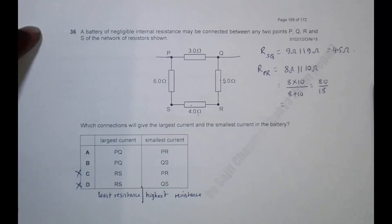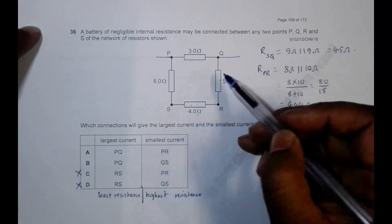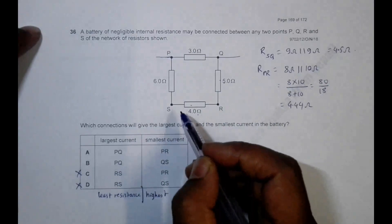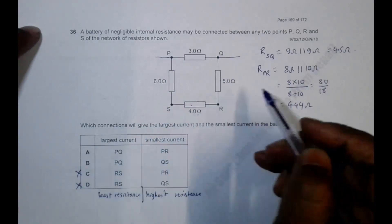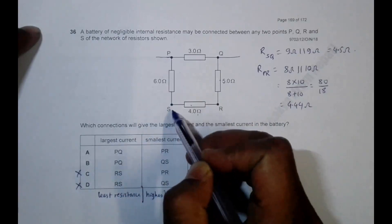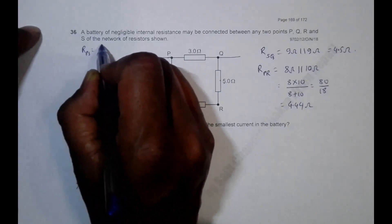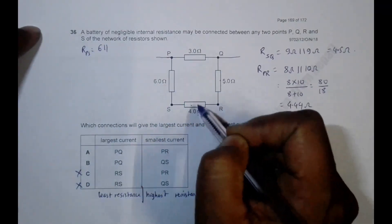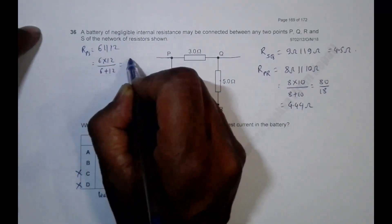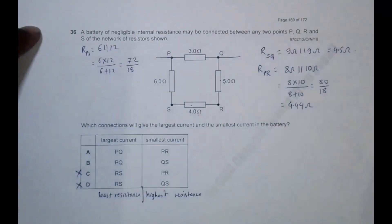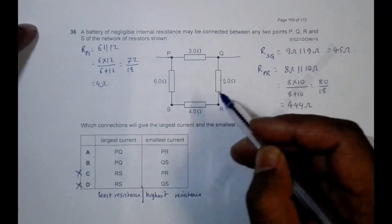80 divided by 18 equals approximately 4.44 ohm. Now for R_PS: it is 6 ohm in parallel with the series combination of 3 plus 5 plus 4, which is 12 ohm. So R_PS equals 6 into 12 divided by 6 plus 12, which is 72 divided by 18, equal to 4 ohm. So R_PS is 4 ohm, and other connections will be definitely less than that.